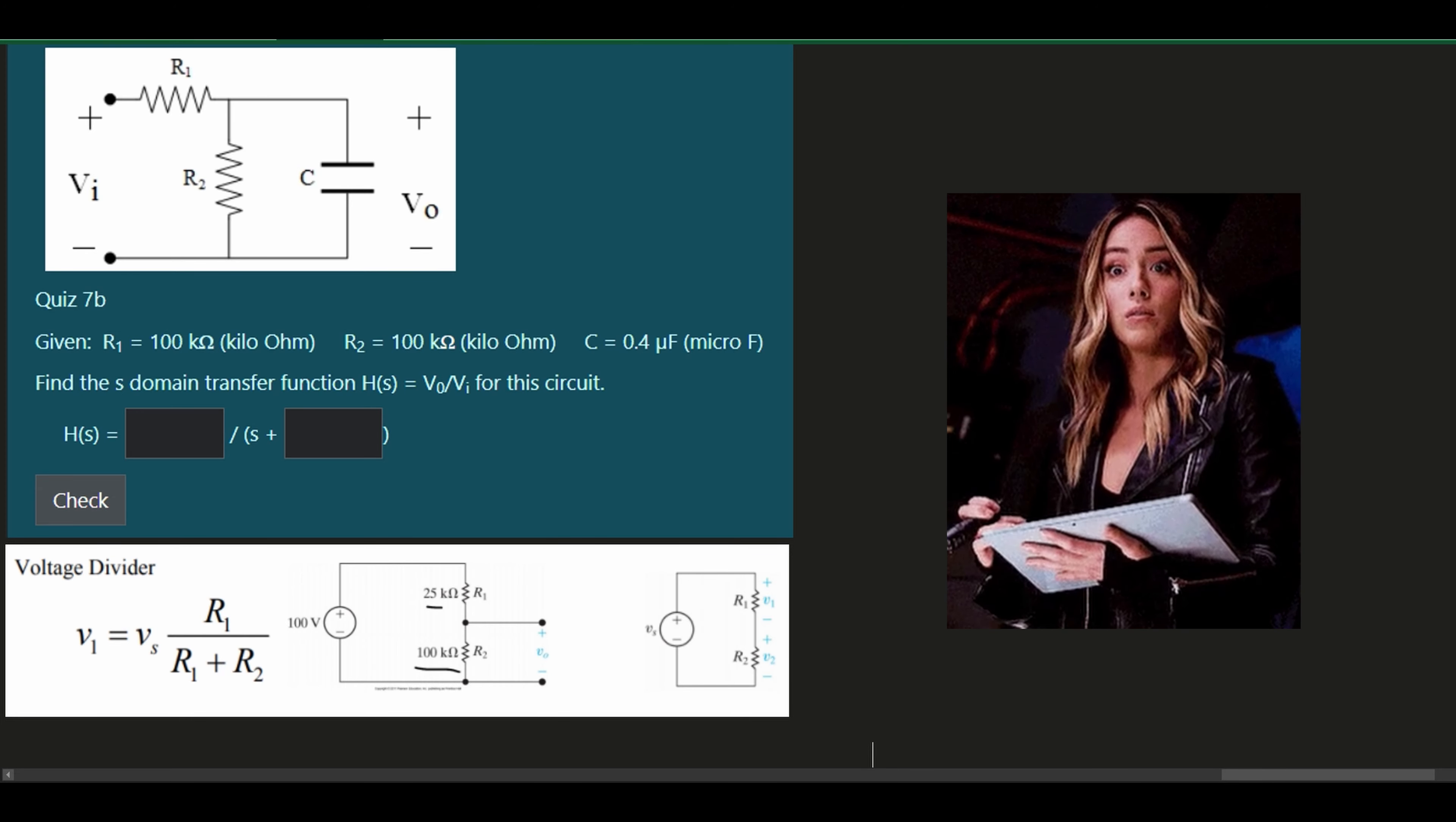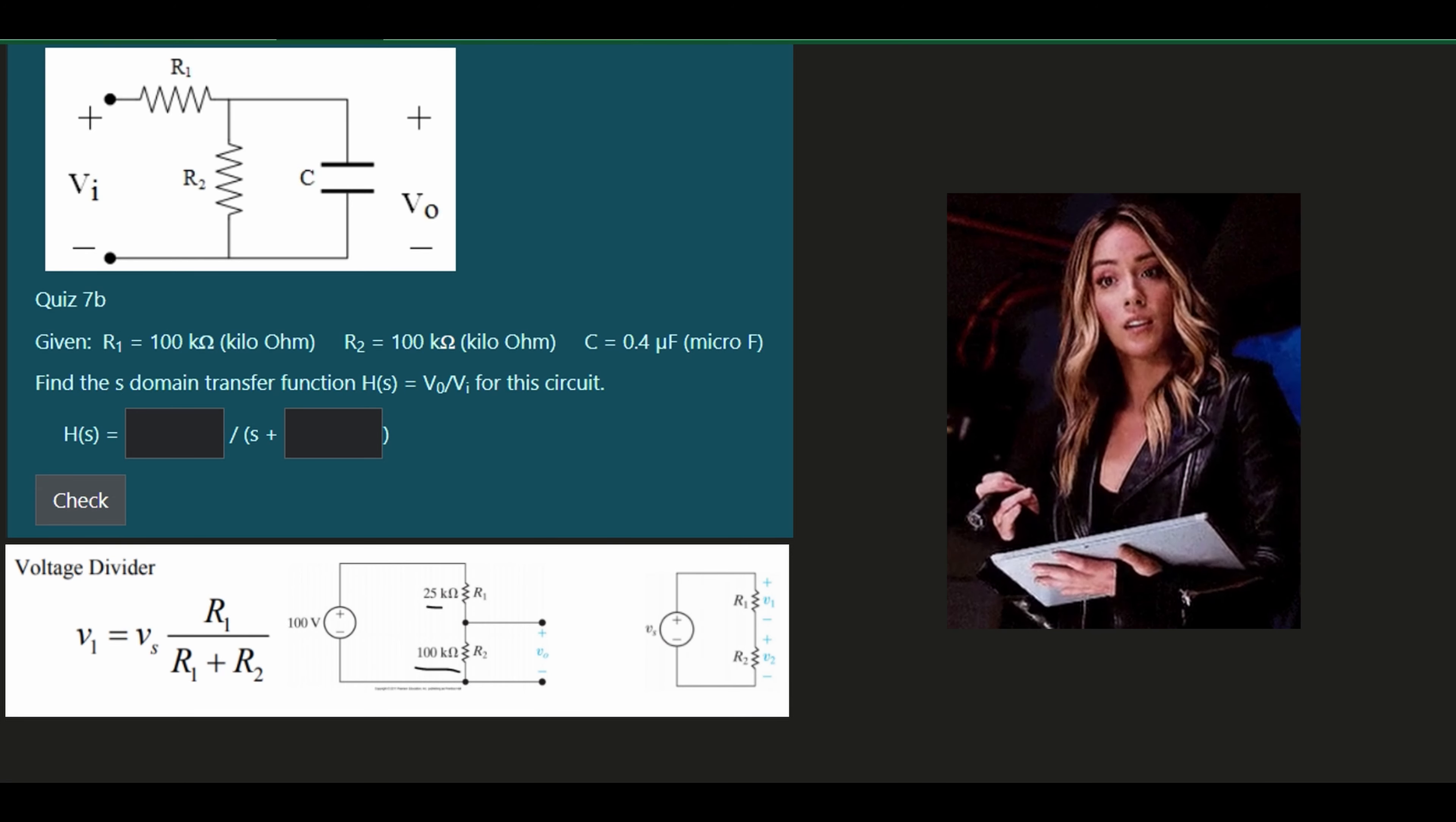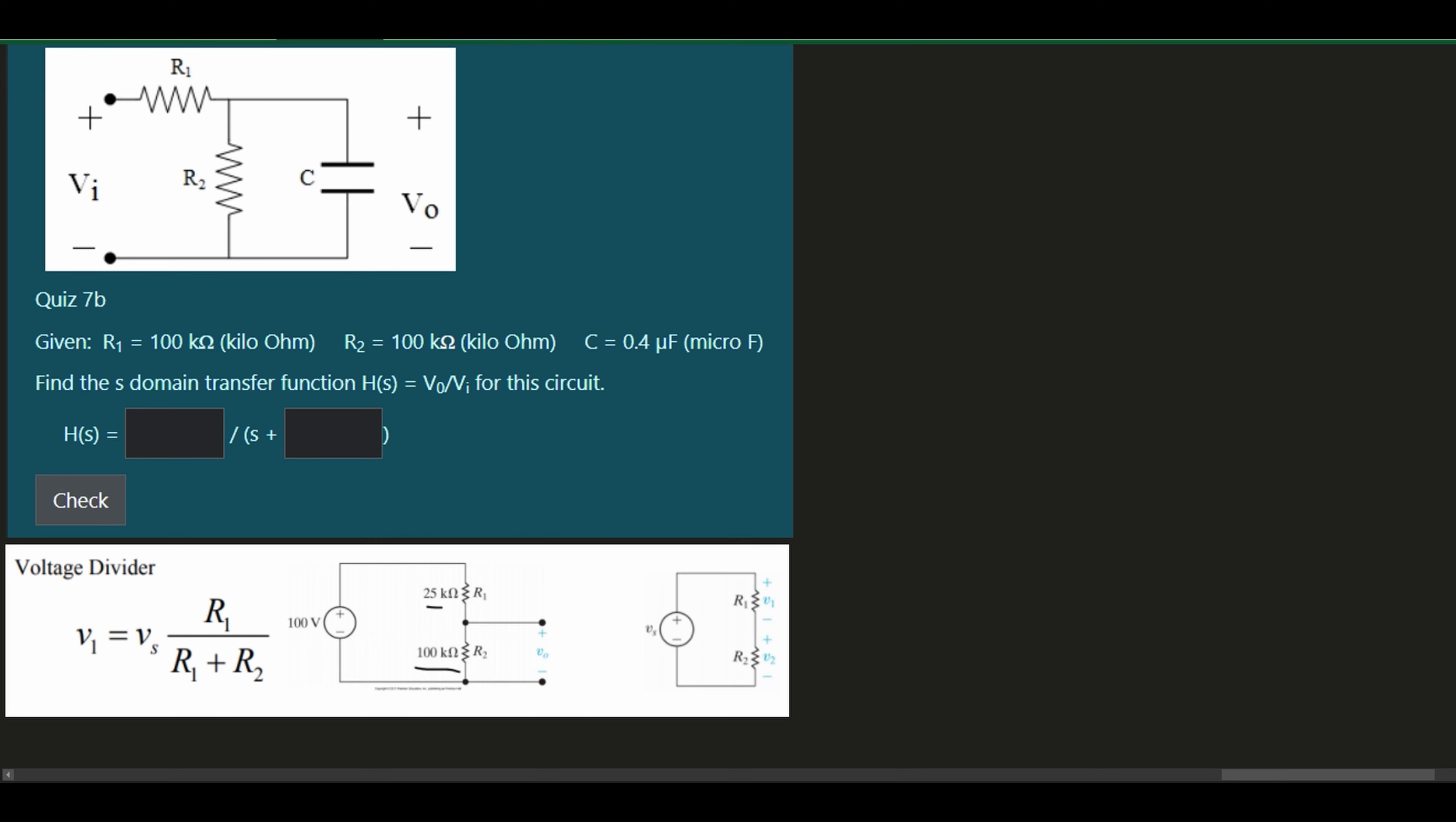We're given the following circuit diagram, and this is for quiz 7b. We have our R1 equaling this resistance, R2 equaling this resistance, and then our capacitor right here. We're going to look at the following circuit diagram, and we need to find the S-domain transfer function, H of S. This is equal to V0 divided by VI for our circuit.